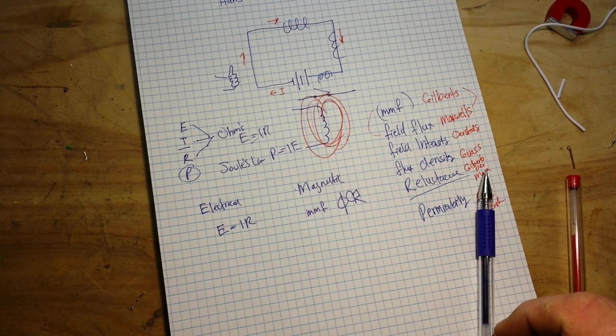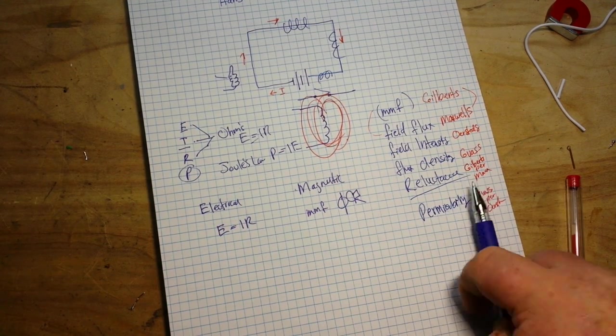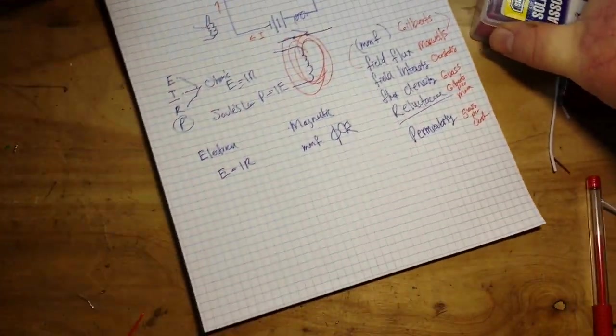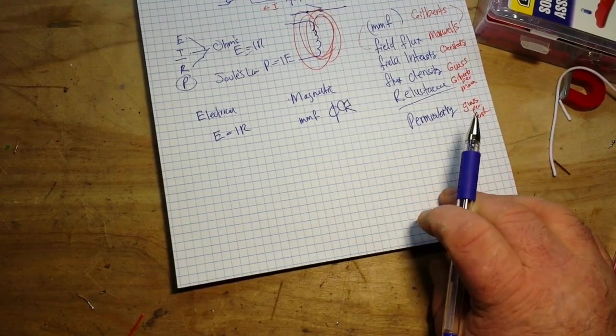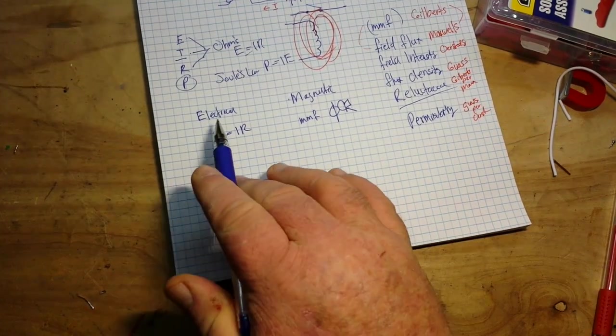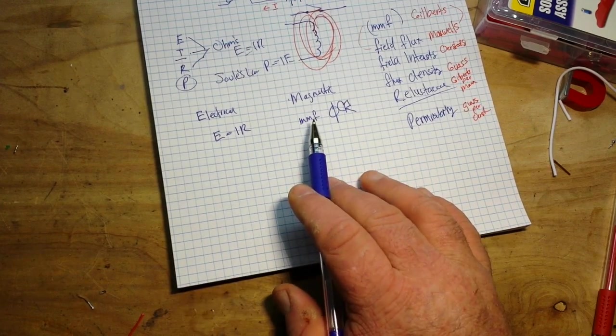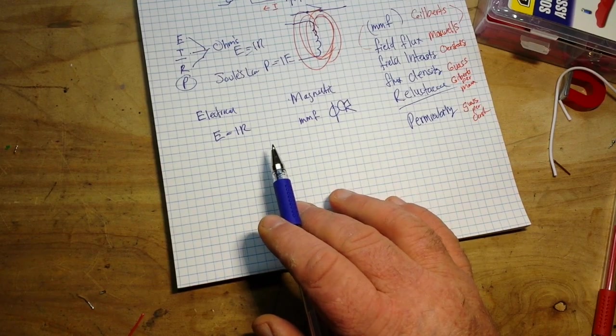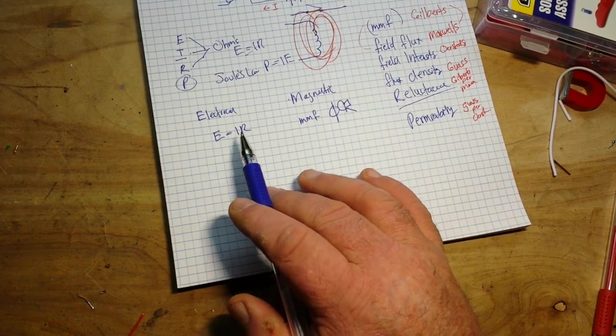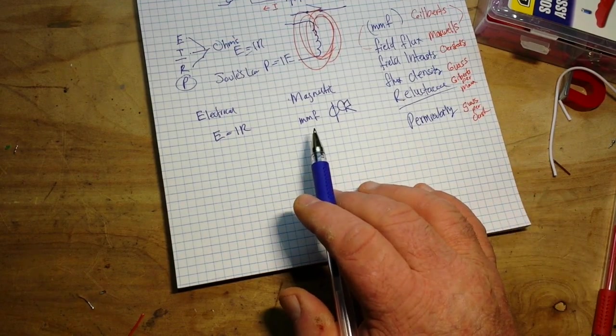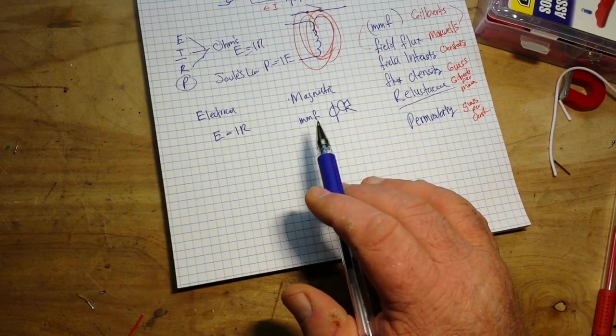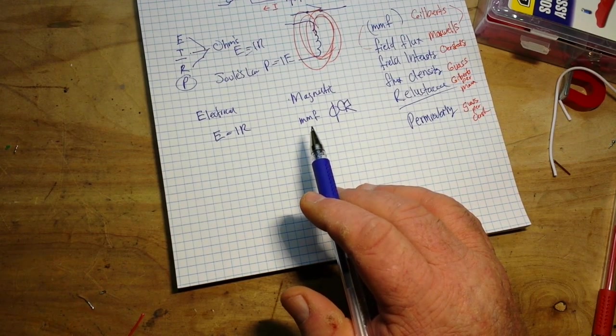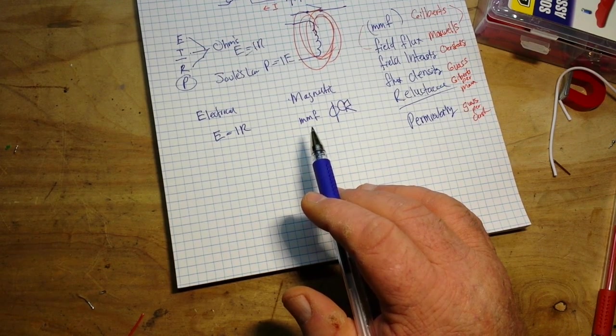Now if we go further into this, and I'm not going to get real into the mathematics of it, I'm just going to kind of touch on it here a little bit. Let me make some room here. In the case of our electrical or our magnetic sides of the coin, a longer piece of material will provide a greater opposition, or either our resistance is greater or our reluctance is greater, all other factors being equal.